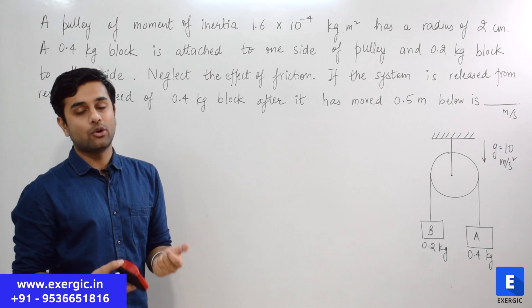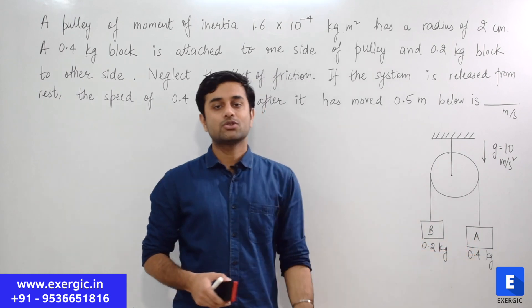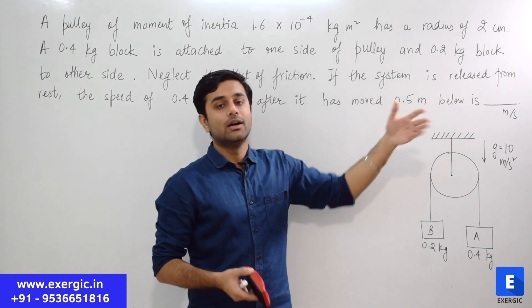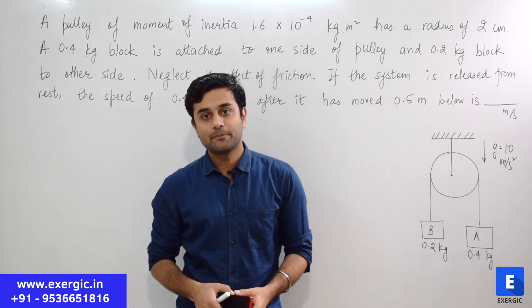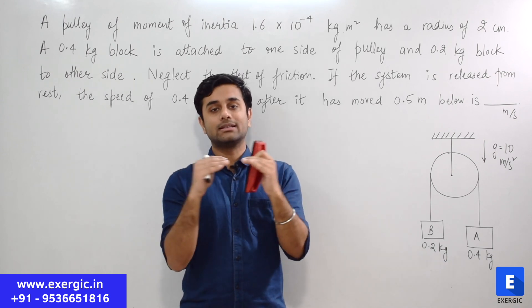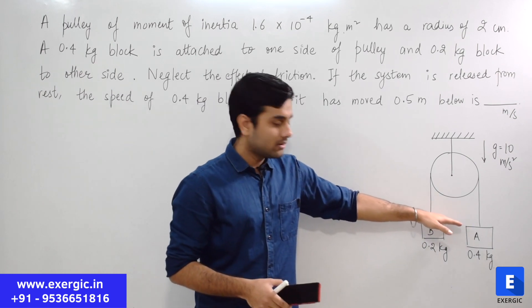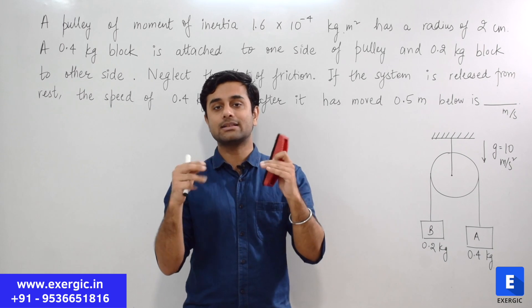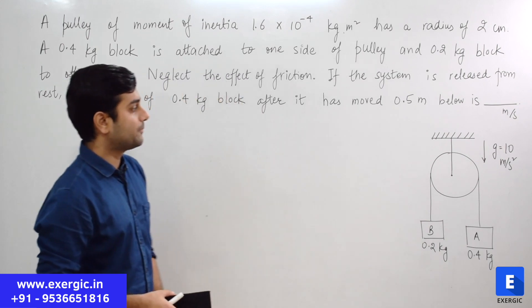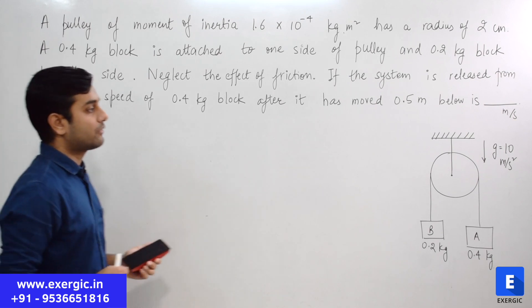The speed of 0.4 kg block, the speed of block A, after it has moved 0.5 meter below is how much? Below is very logical to say because out of A and B, A is heavier. So A will go down, B will go up. So basically by saying 0.5 meter below means when it has moved by 0.5 meter. This is the question in front of you.